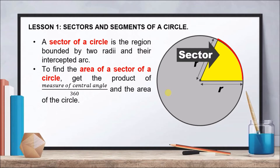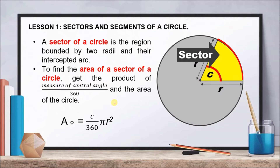To find the area of a sector, we use the formula: Area of sector = (central angle / 360) × π r². Our central angle is an angle with a vertex at the center of the circle, and the two sides are radii of the circle. We are only getting the fractional part of the circle and multiplying that by the entire area of our circle.